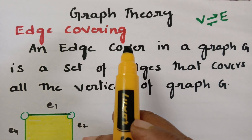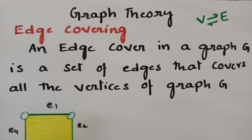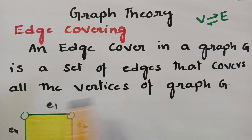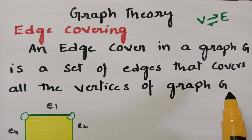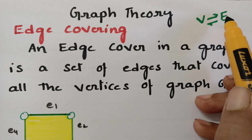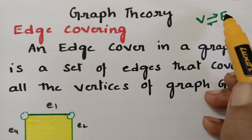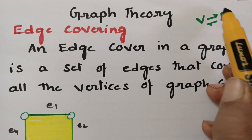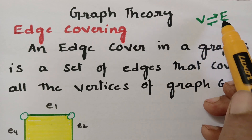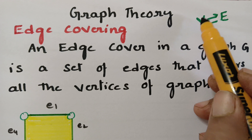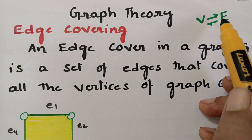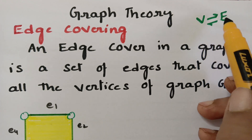Today's video is on edge covering, a topic from graph theory. An edge cover in a graph G is a set of edges that covers all the vertices of the graph G. For vertex cover we select certain vertices to cover all the edges, whereas for edge covering we select certain edges to cover all the vertices of the graph G — vertices versus edges. So this is quite simple.